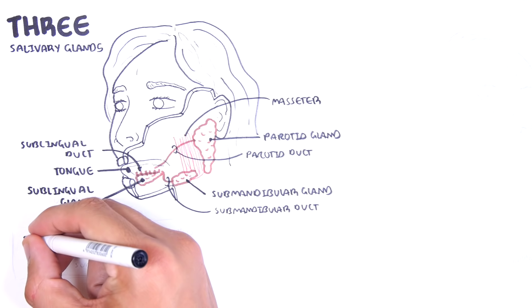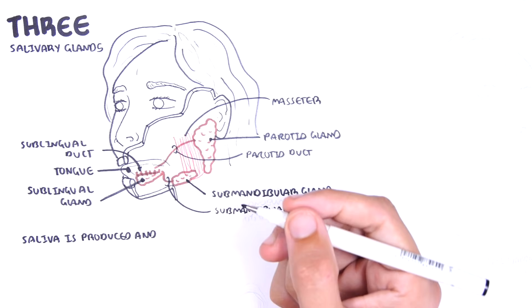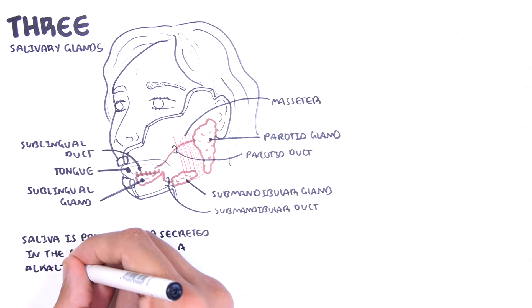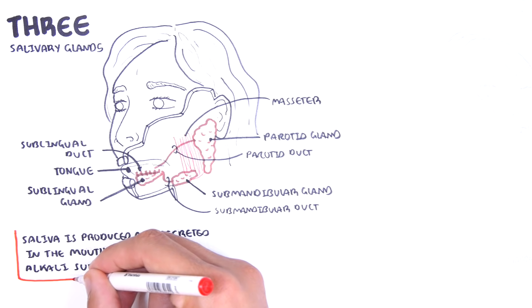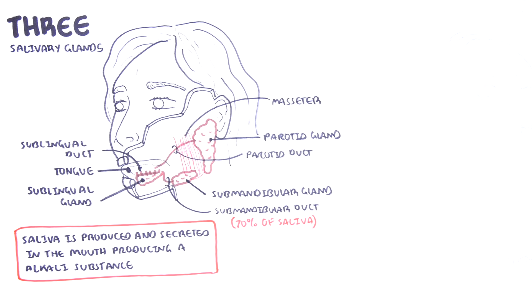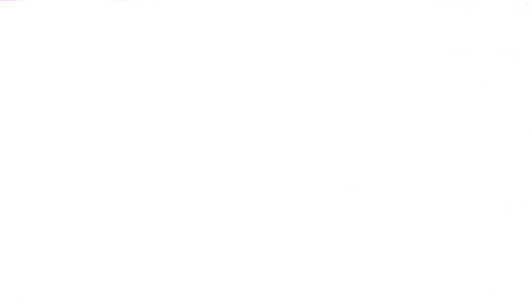Saliva is produced and secreted into the mouth producing an alkalized substance. Interestingly, the submandibular gland produces the majority of the saliva, roughly 70%. Second is the parotid glands which is about 25% of saliva production.